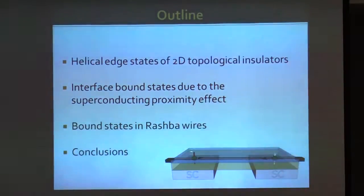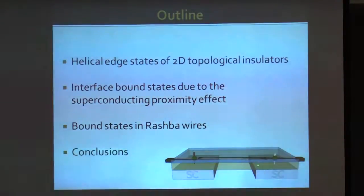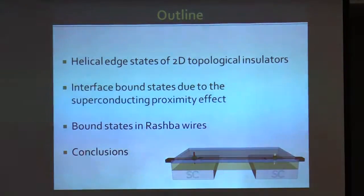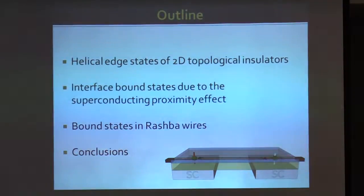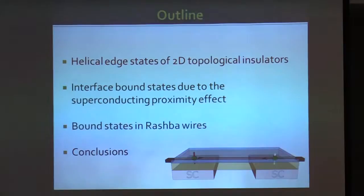We have a two-dimensional topological insulator with a helical edge state, which we gap out using superconductivity in certain regions and using umklapp scattering in the middle region. At the interfaces, we find a generalization of Majorana states, namely parafermion states. I will also show how these states can in principle be realized similarly in Rashba wires, and then I will conclude.